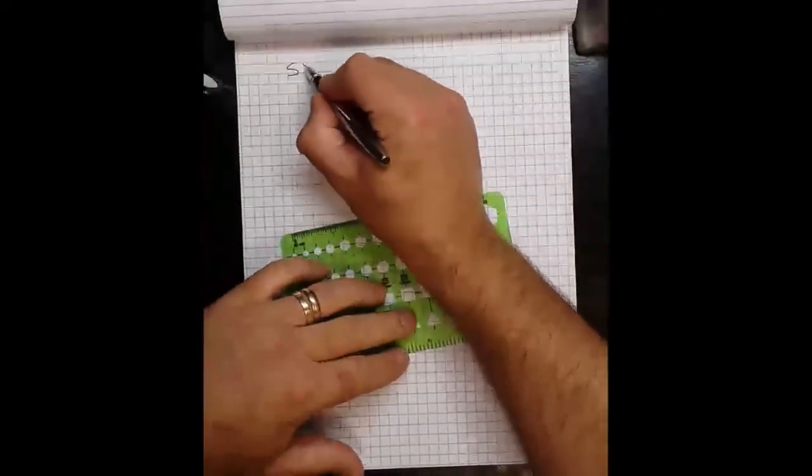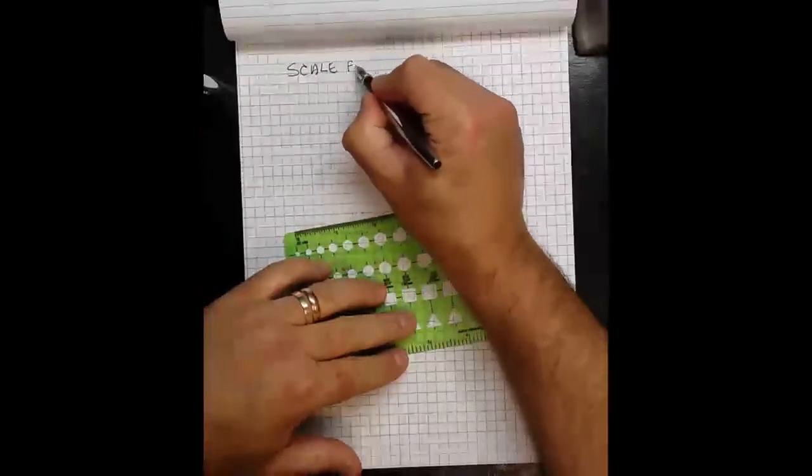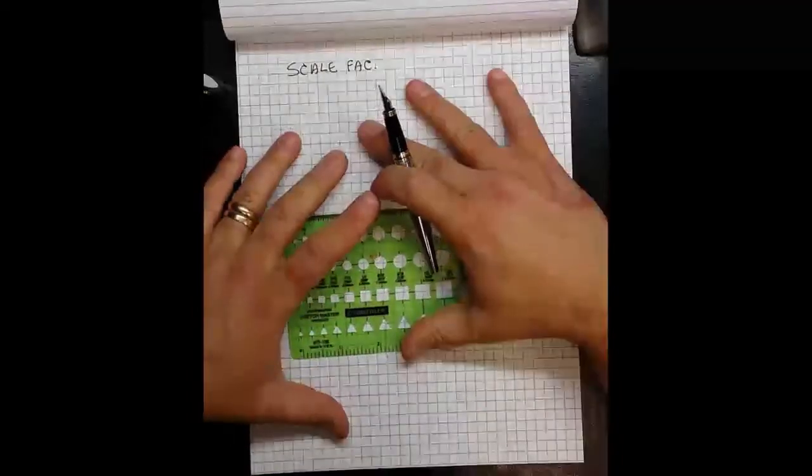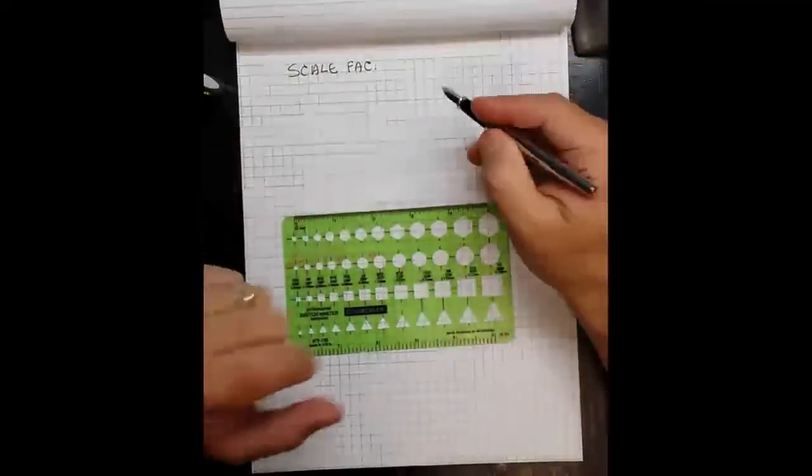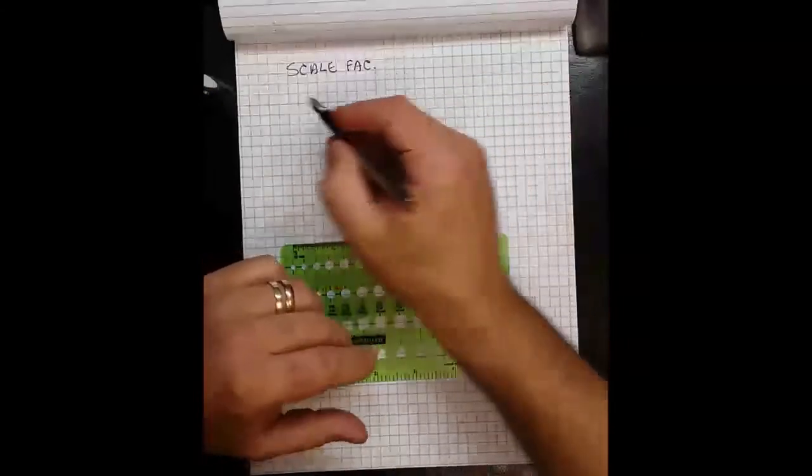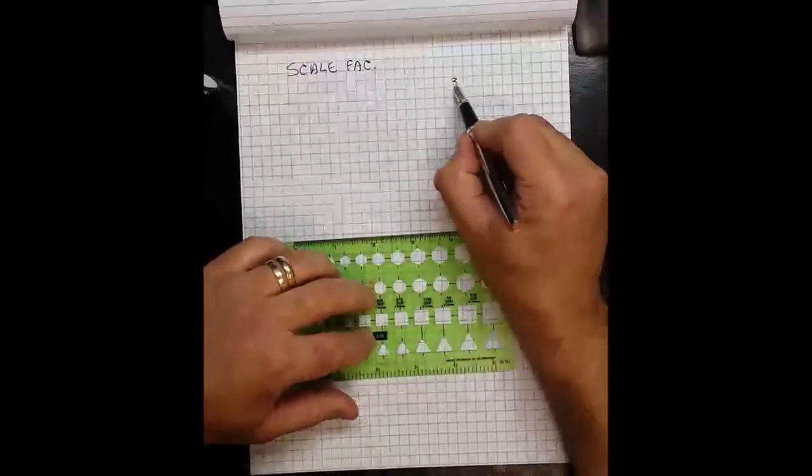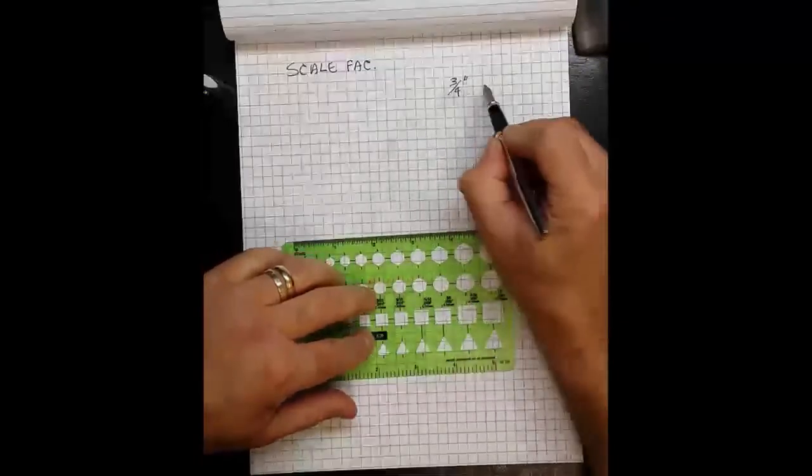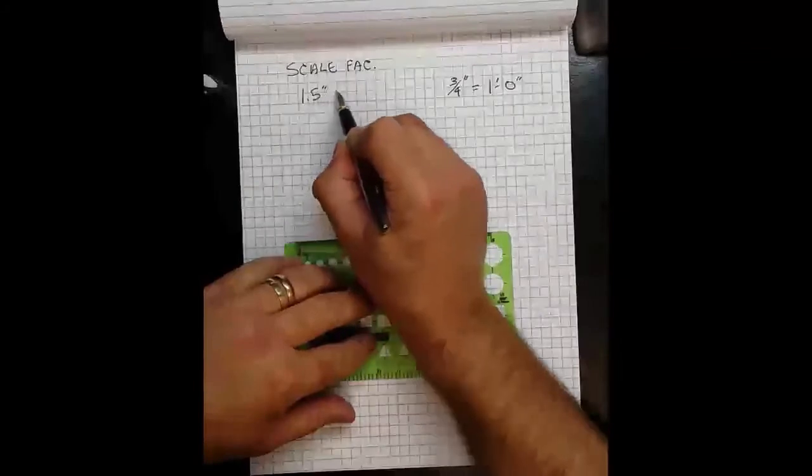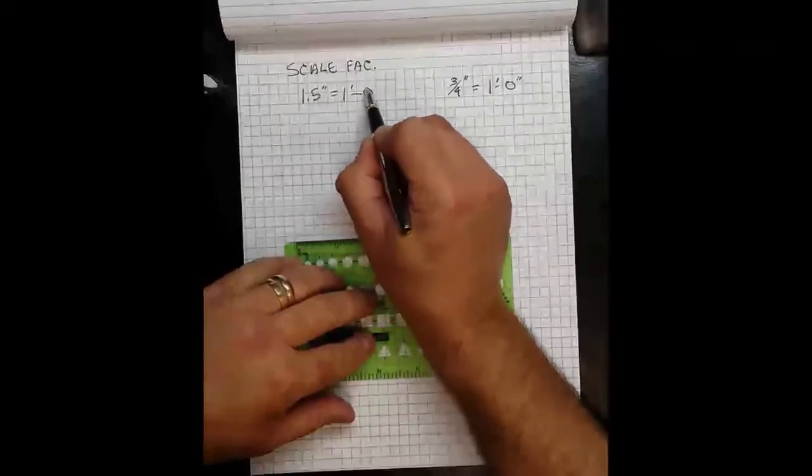So with scale factor, we're dealing with what is the relationship between the scale I'm drawing at and the physical object. And so for these examples, I'm going to do scale factors of three-quarter inch equals one foot and inch and a half equals one foot. And these are two common scales.